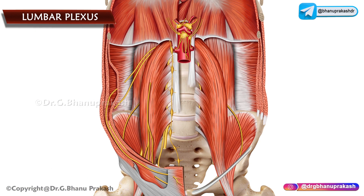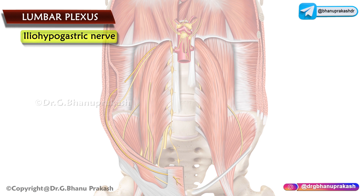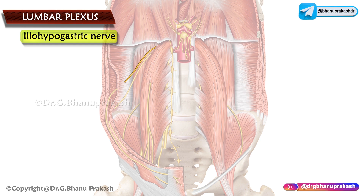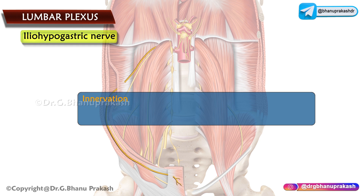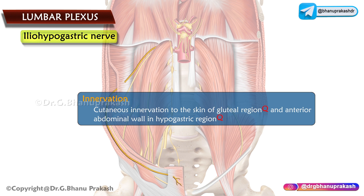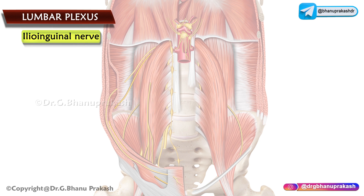The first nerve is the iliohypogastric nerve, which emerges beneath the lateral border of the psoas major muscle, passes downward and laterally in front of the quadratus lumborum, and at the lateral border of the quadratus lumborum it pierces the aponeurotic origin of the transversus abdominis just above the iliac crest, running into the anterior abdominal wall. Its cutaneous innervation is mainly to the skin of the gluteal region and anterior abdominal wall, particularly the hypogastric region.